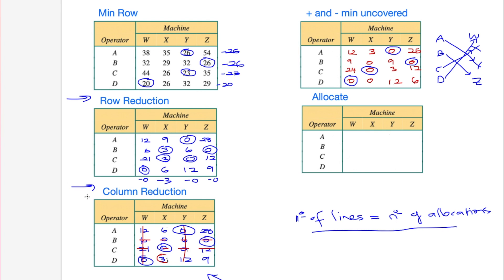To summarize the Hungarian algorithm: do minimum row reduction, then column reduction, then check by covering all zeros with the minimum number of lines. If the number of lines equals the number of allocations needed, allocate - starting with the most restrictive rows and columns that have only one zero. If it takes fewer or more lines than needed, keep going: add the minimum uncovered number to all crosshairs, subtract it from all uncovered numbers, and try covering the zeros again. If that doesn't work, go all the way back to row reduction and start the process again.